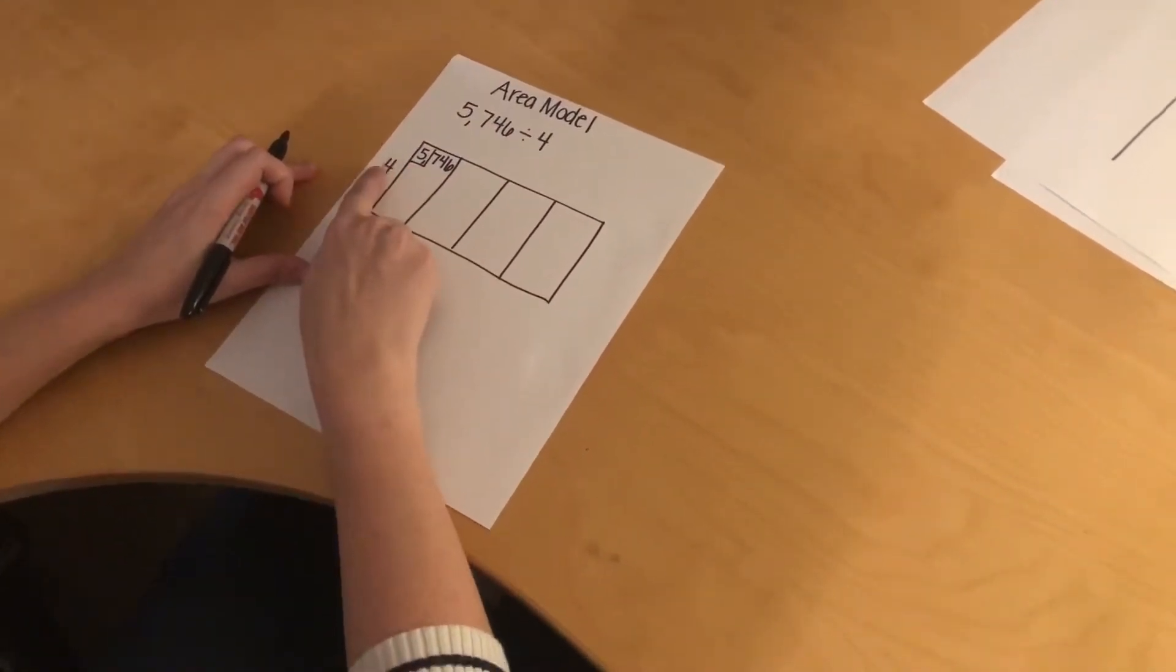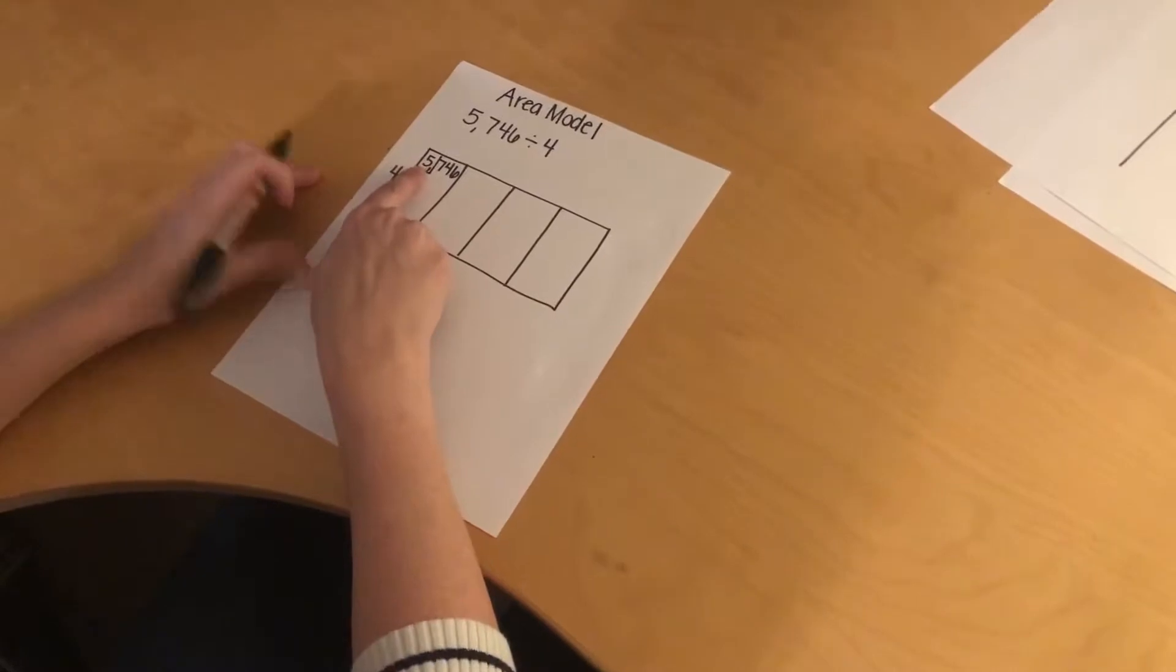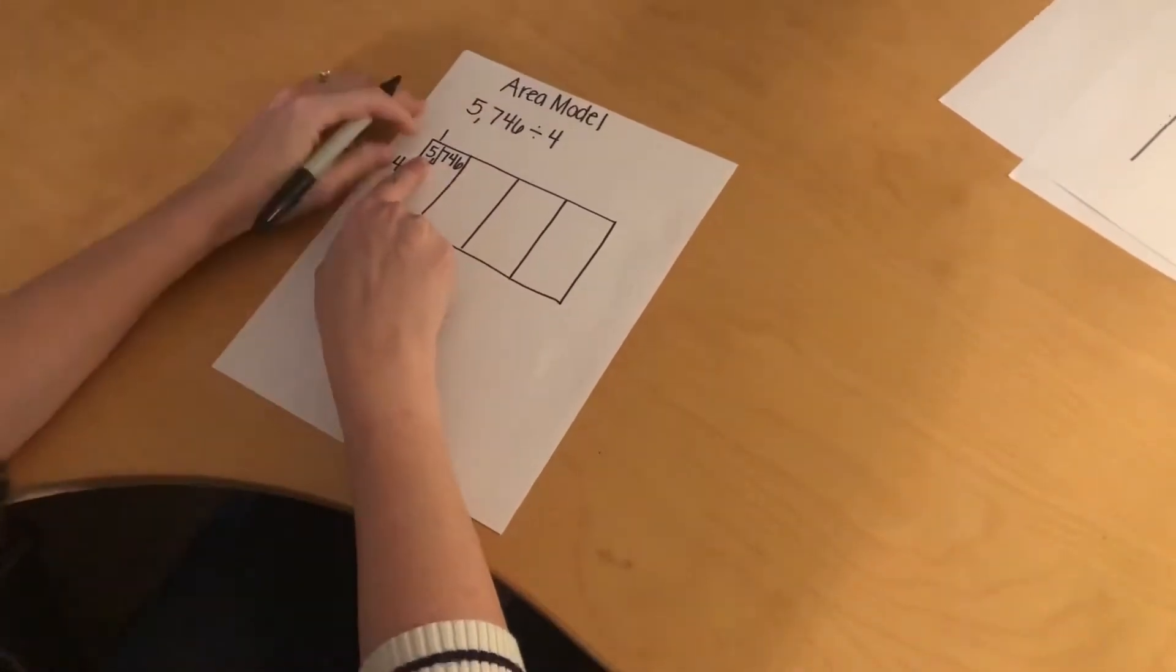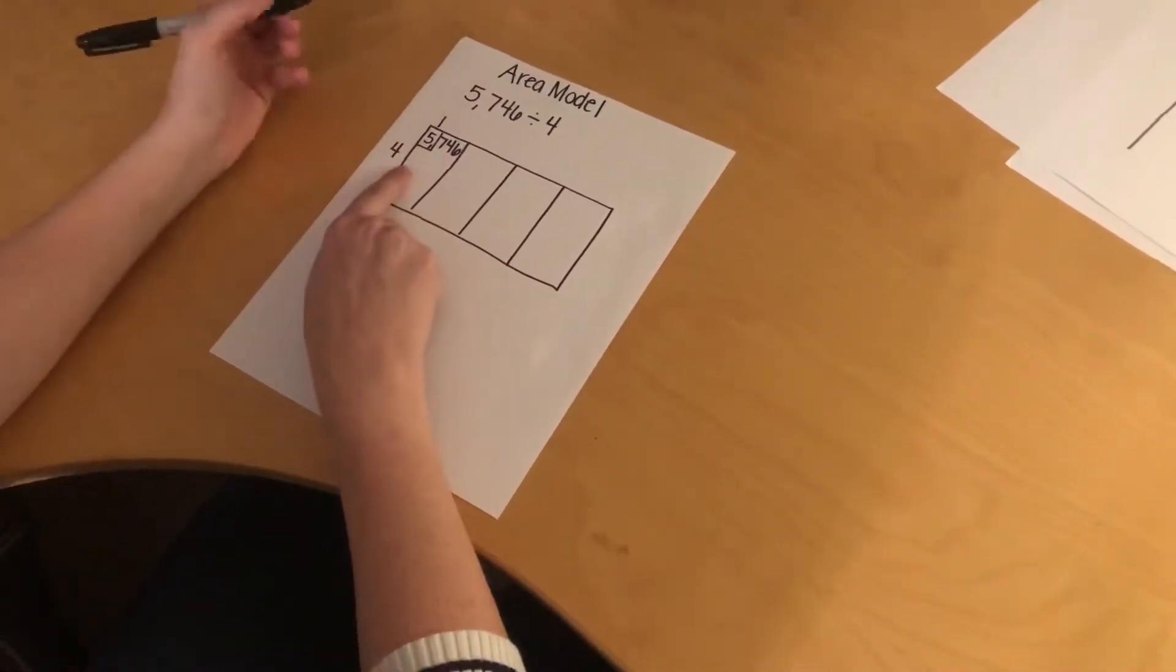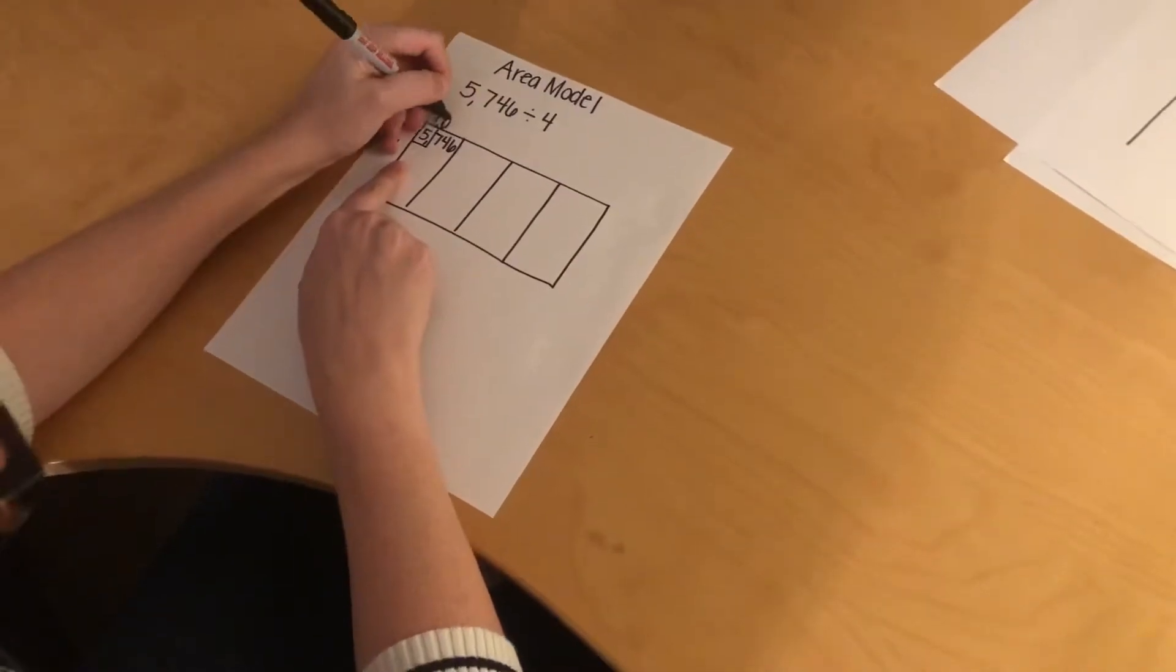So how many times does 4 go into 5? One time. But since it's the thousands place, it's not just 1, it's actually 1,000.